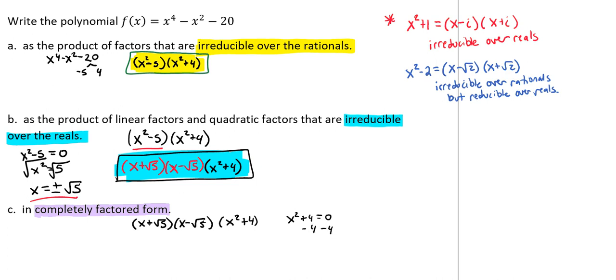We're going to subtract 4 from both sides, giving us x^2 = -4, then square root both sides to get x = ±2i.